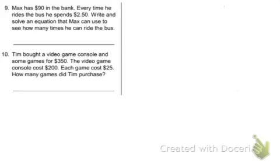Macho 6 study guide, problems 9 and 10. Max has $90 in the bank. Every time he rides the bus he spends this much. Write and solve an equation. So let's write our equation. So he has 90, that's the total. The total is $90.